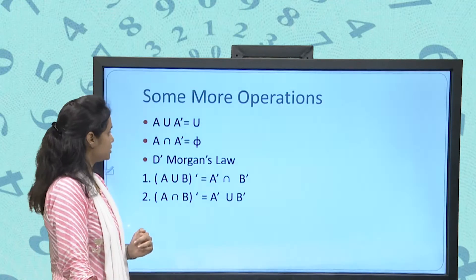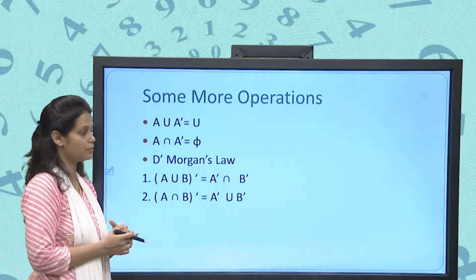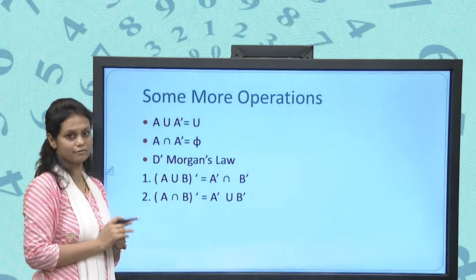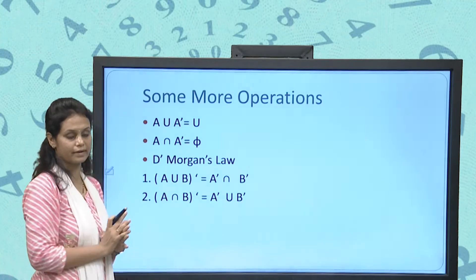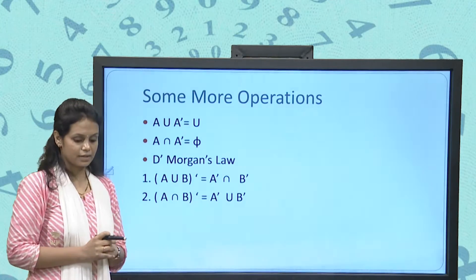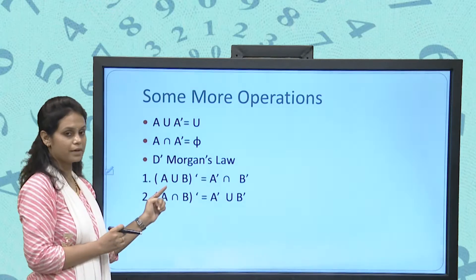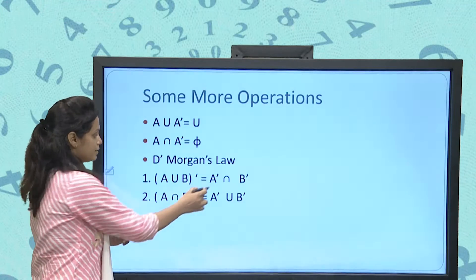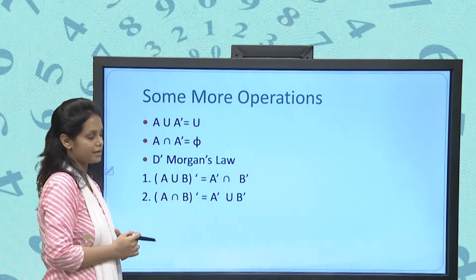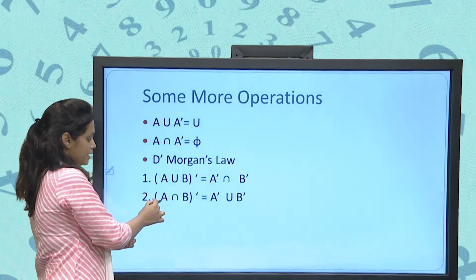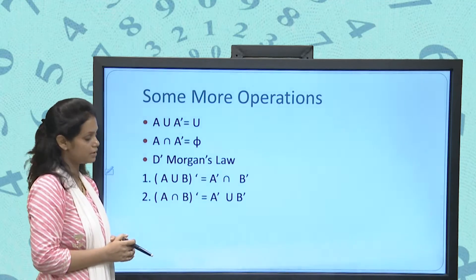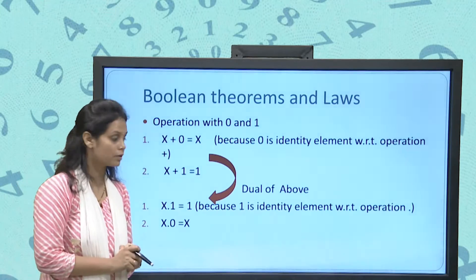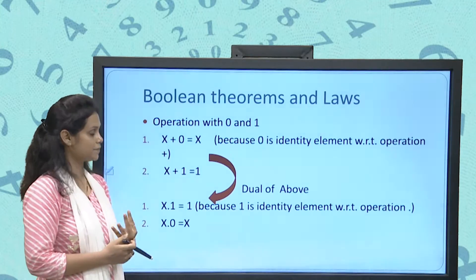A ∪ A is always A; A ∩ A is always A; and A'' is always A. A ∪ A' is always U because they are complements of each other, and A ∩ A' is always φ because there is no common element. De Morgan's law states: (A ∪ B)' = A' ∩ B', and (A ∩ B)' = A' ∪ B'.